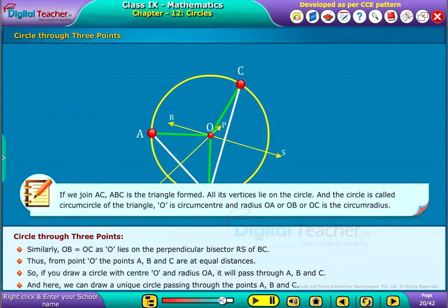Make a note that if we join AC, ABC is the triangle formed, all its vertices lie on the circle. And the circle is called circumcircle of the triangle. O is circumcenter and radius OA or OB or OC is the circumradius.